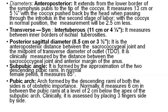Subpubic angle is formed by the approximation of the two descending pubic rami. In a normal pelvis it measures 85 degrees. Pubic arch is formed by the descending rami of both sides. Normally it measures 6 cm between the pubic rami at the level of 2 cm below the apex of the pubic arch. Clinically, it is assessed by placing three fingers side by side.